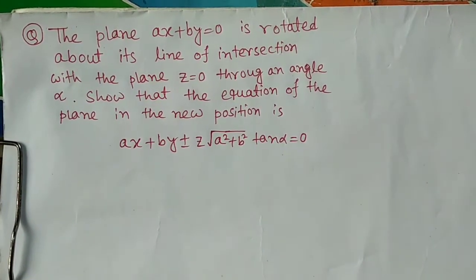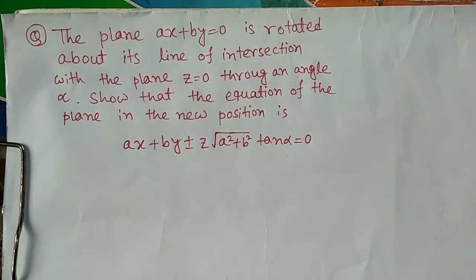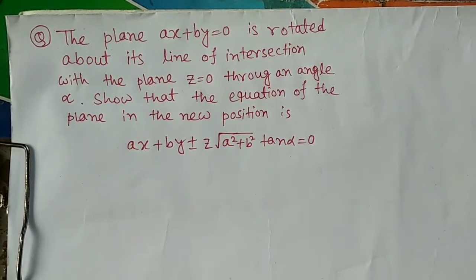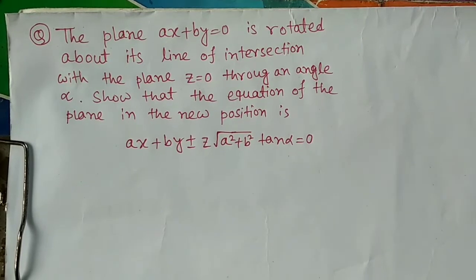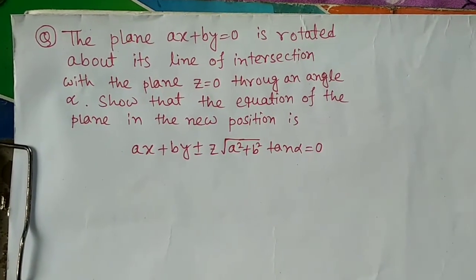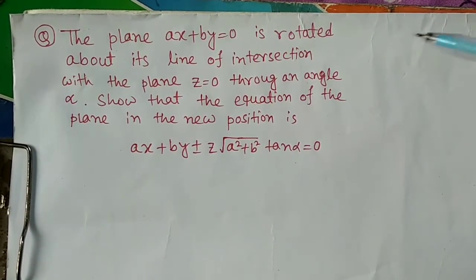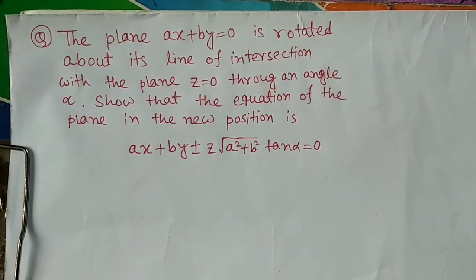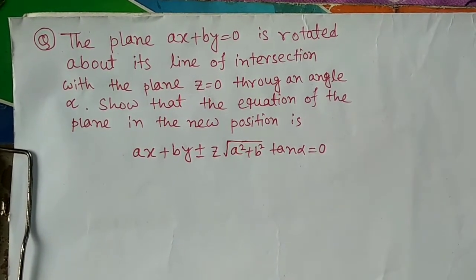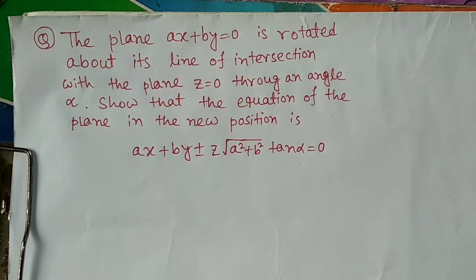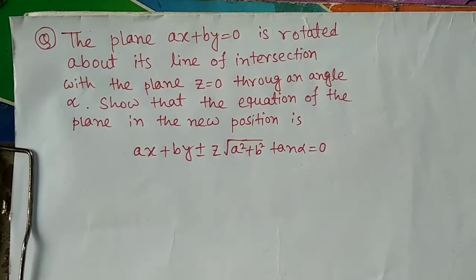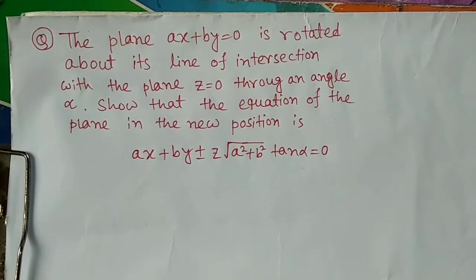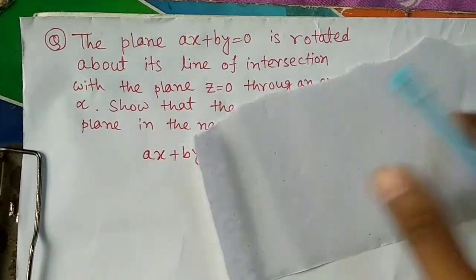Hello guys, welcome back to another video. In this video I have written a very important question from the 3D chapter — the plane. The question is: the plane x plus by is rotated about its line of intersection with the plane z equals to 0, through an angle alpha, so that the equation of the plane in the new position is x plus by plus minus z times square root of (a squared plus b squared) times tan alpha equals to 0.